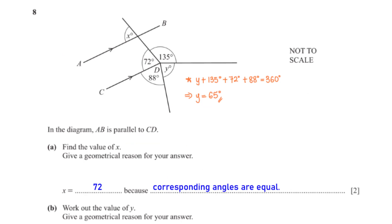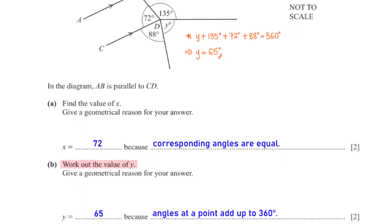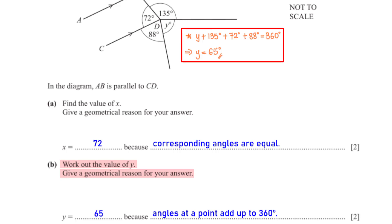In the diagram, AB is parallel to CD. Find the value of x, giving a geometrical reason. These two are corresponding angles; corresponding angles are equal, so x is 72. Work out the value of y, giving a geometrical reason. Angles at a point add up to 360 degrees, so y + 135 + 72 + 88 = 360. Making y the subject gives y = 65.